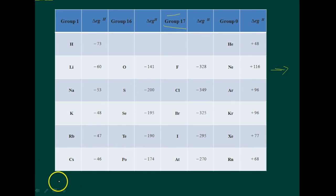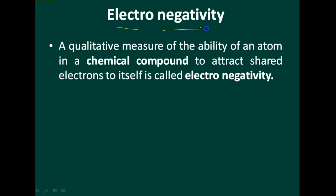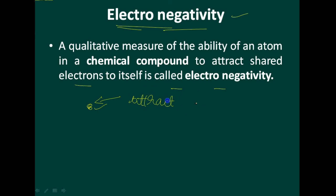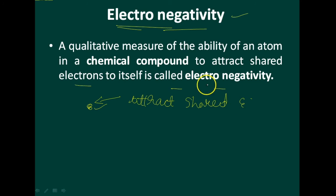This figure shows the electron gain enthalpies in kilojoule per mole of some main group elements. Next, the concept of electronegativity — a quantitative measure of the ability of an atom in a chemical compound to attract shared electrons to itself is called electronegativity. So it is the ability of an atom to attract shared electrons to itself.